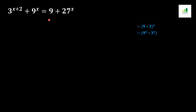In order to solve this question, first we should move this 9 from one side to the other side of the equation — it will convert to a negative sign. And 27 to the power x will also move to the other side of the equation and convert into minus 9 to the power x. This is the first step.